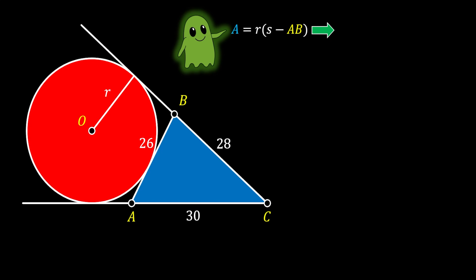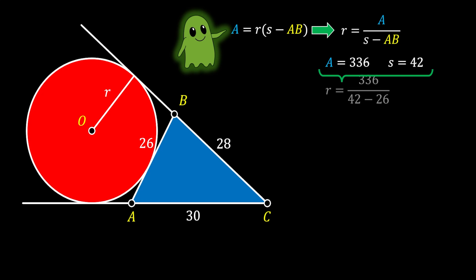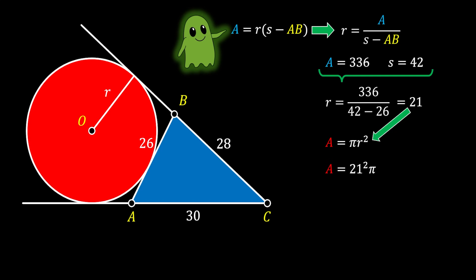From this formula we can calculate the radius, and we already have the area of triangle ABC and the semi-perimeter from method one, so we just bring those values in. Substituting into our formula with AB = 26, after simplification we get that the radius equals 21. The area of the red circle is π r² = 21² π = 441π square units. Again, we have the same solution.